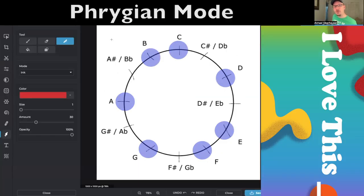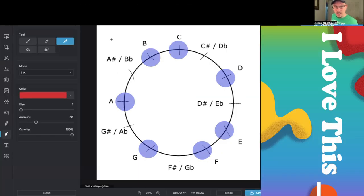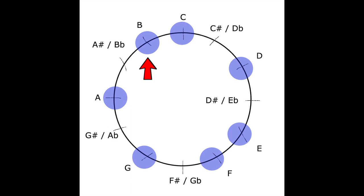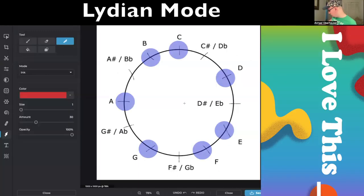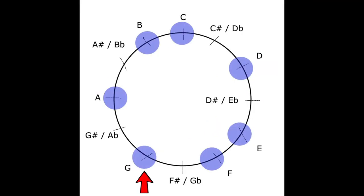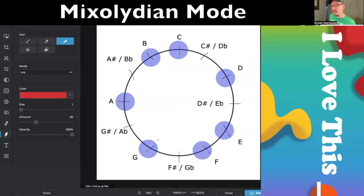If we start on E, we get a different mode. That is the Phrygian mode. Then if we start on F, that is the Lydian mode. If we start on G, that is the Mixolydian mode that I was talking about at the start of the video.